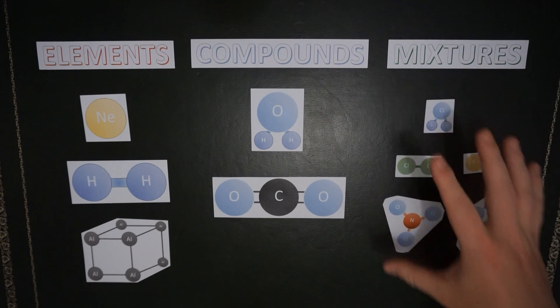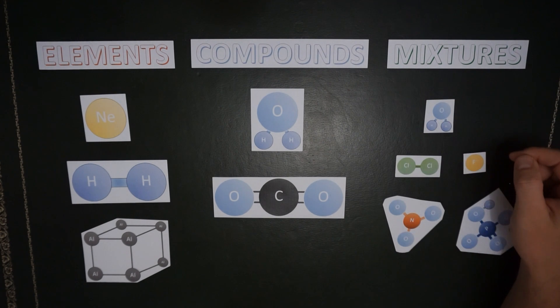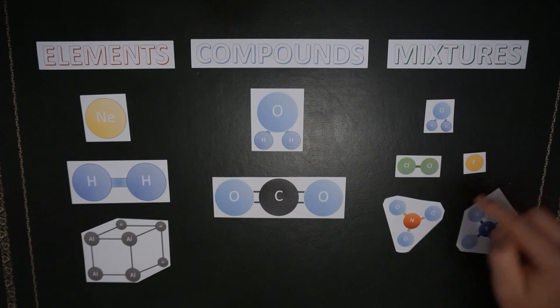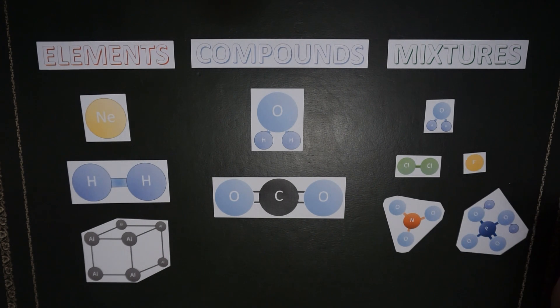We can't write a chemical formula for tap water though because it's a mixture. It contains water molecules, but it also contains chlorine, fluoride, nitrates, phosphates, and a whole bunch of other elements that we might not even be aware of. So we can't actually label that H2O because it's a mixture of all different elements and compounds.